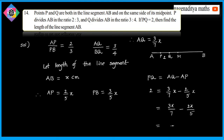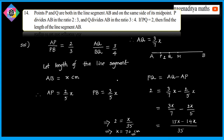The LCM of 7 and 5 is 35. So 3x/7 − 2x/5 = (15x − 14x)/35 = x/35. This implies 2 = x/35, so x = 70. Therefore, the length of the line segment AB is 70 centimeters.